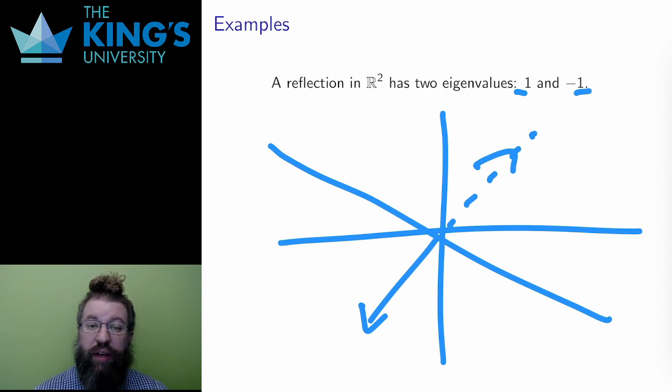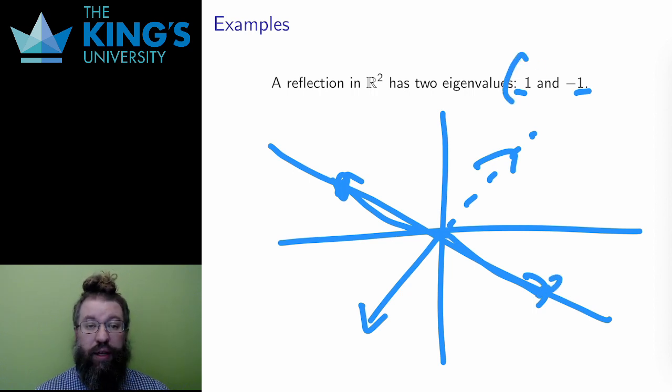But there can also be a vector on the line of reflection itself. These vectors do not move under the reflection. Vectors that do not move are eigenvectors with eigenvalue 1. Multiplying by 1 doesn't do anything, so these vectors are unchanged.